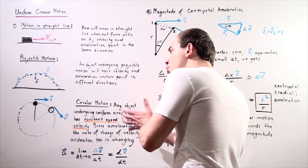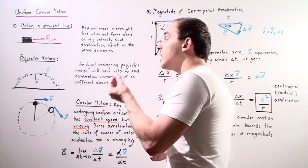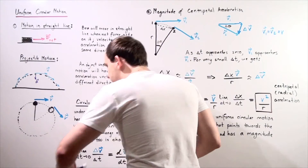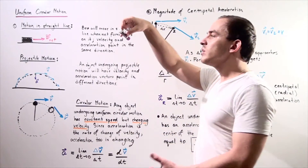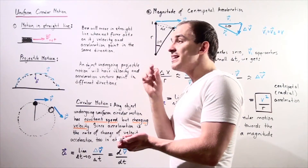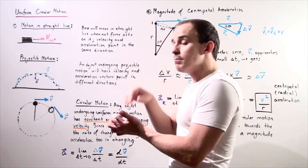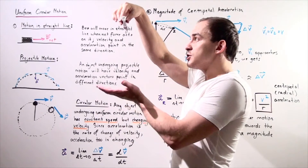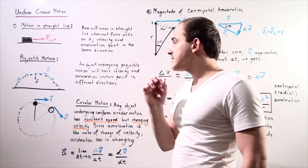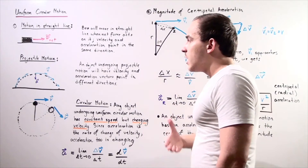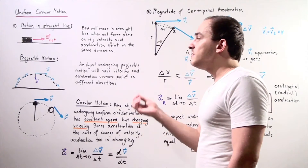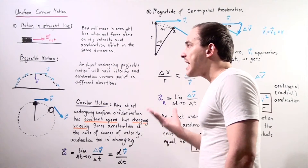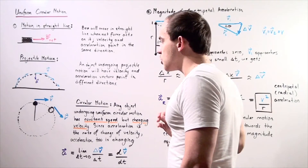This is not always true for objects in freefall. Sometimes the net force does act in the same direction as the velocity — for example, if we release an object directly downward, the net force, velocity, and acceleration all point downward. So when we have motion in two dimensions, sometimes the net force and velocity point in the same direction, but that's not always true. For objects moving in one dimension, that is pretty much always true.